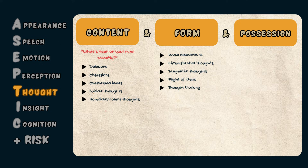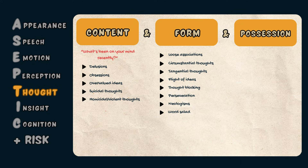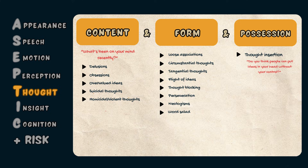Perseveration refers to the repetition of a particular response — for example, the patient may keep repeating their name in response to all questions. Neologisms are when a patient makes up words that are unintelligible or don't make sense. A word salad is when a patient speaks a random string of words without relation to one another. Thought possession includes thought insertion, which is the belief that thoughts can be inserted into the patient's mind — assessed by asking 'Do you think people can put ideas into your head without your control?'